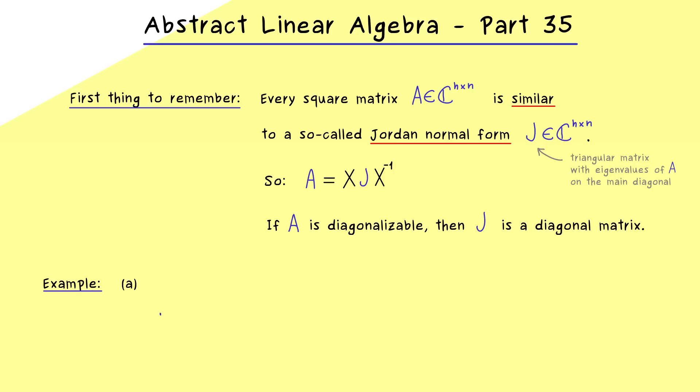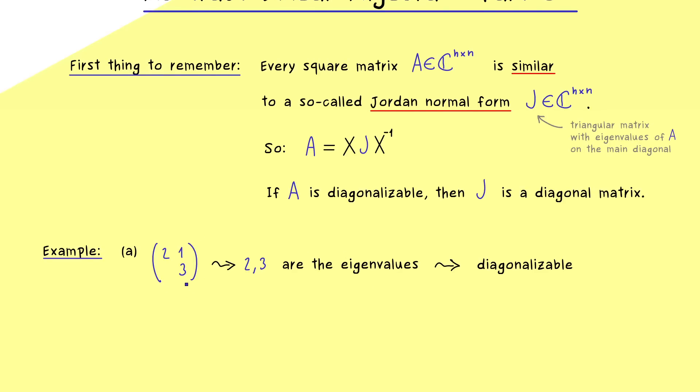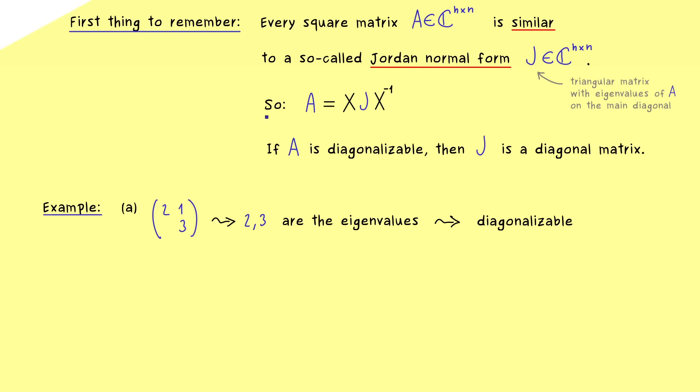Let's keep it simple with a 2x2 matrix. Now this is not a diagonal matrix, but we immediately see that 2 and 3 are the eigenvalues of that matrix. So we have two different eigenvalues for a given 2x2 matrix. And this implies we can form a basis consisting of eigenvectors and therefore the matrix is diagonalizable. So we don't have any problems here. This matrix here can be transformed to a diagonal matrix without a problem.